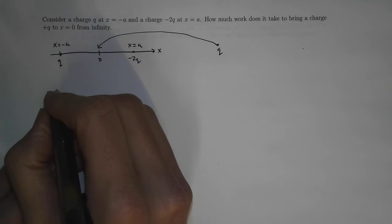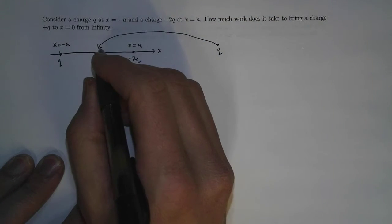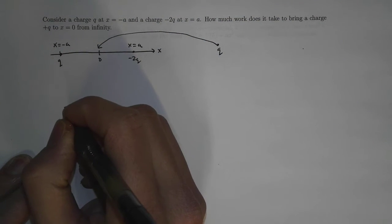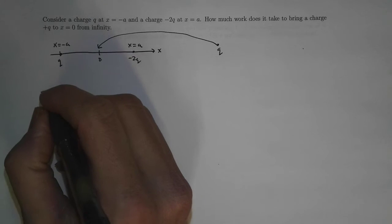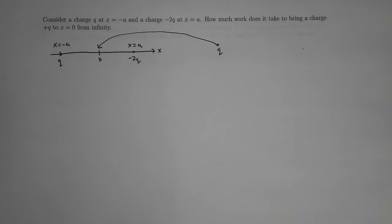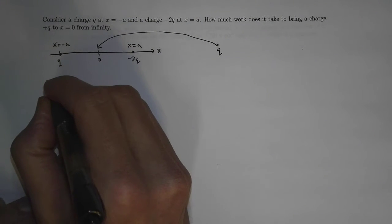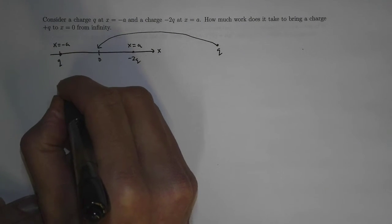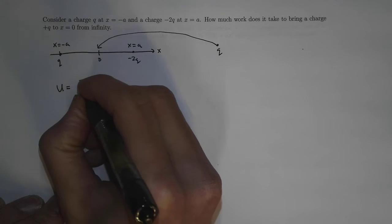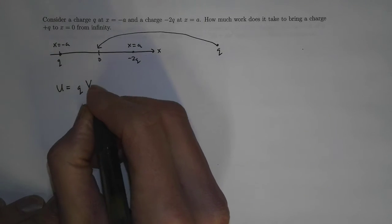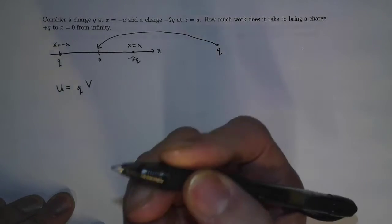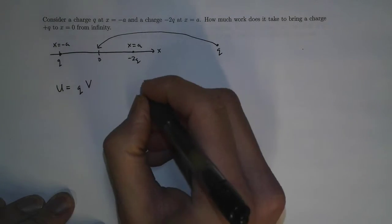Well, the amount of energy it takes to move this charge from here and drop it in there is simply the electrostatic potential energy, which is simply U = qV, where V is the potential.